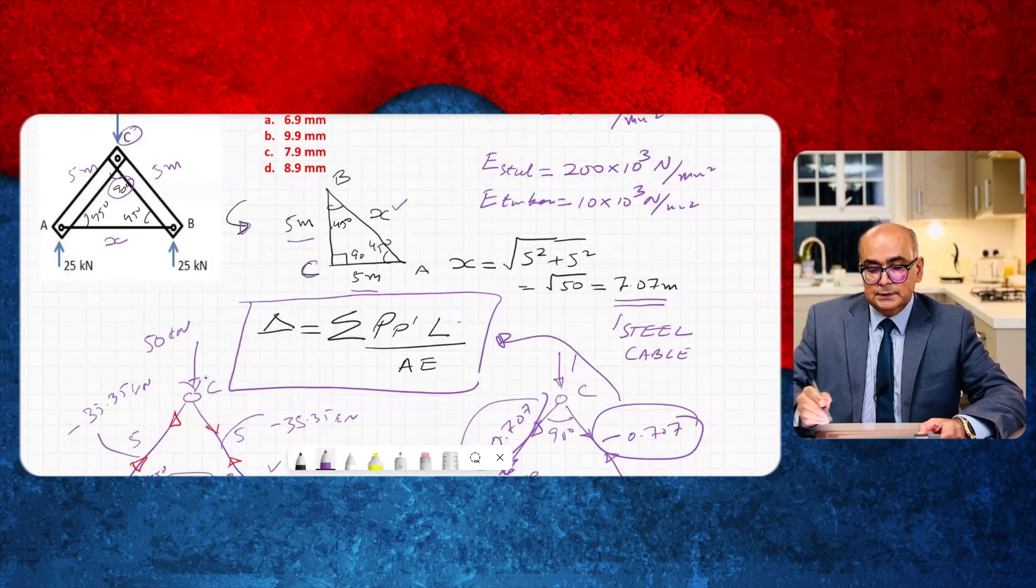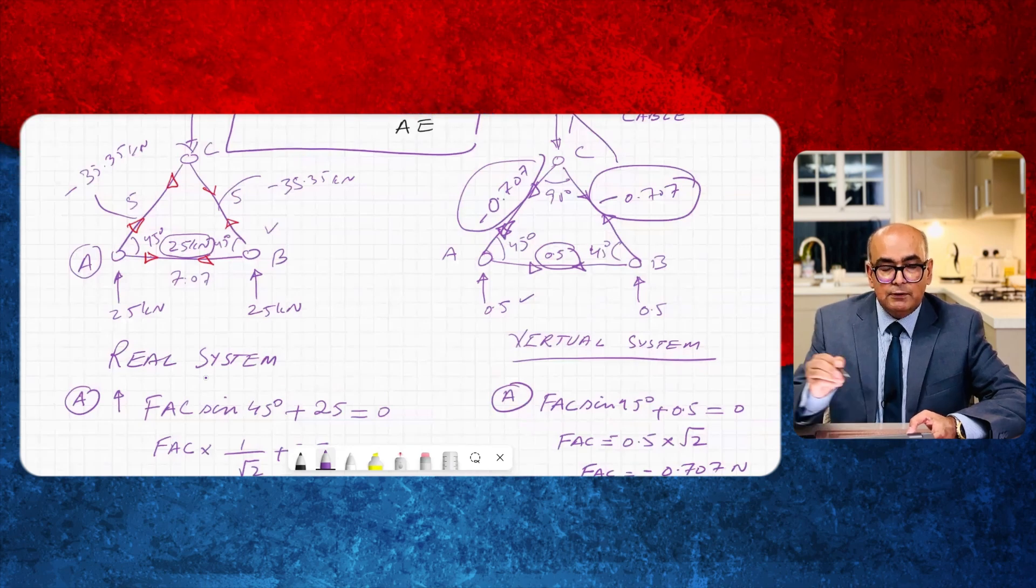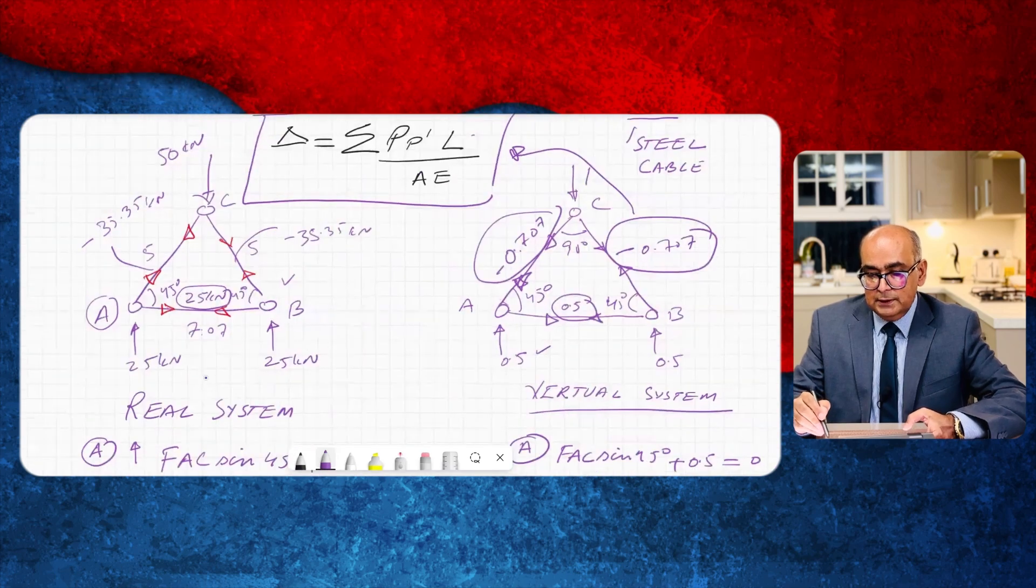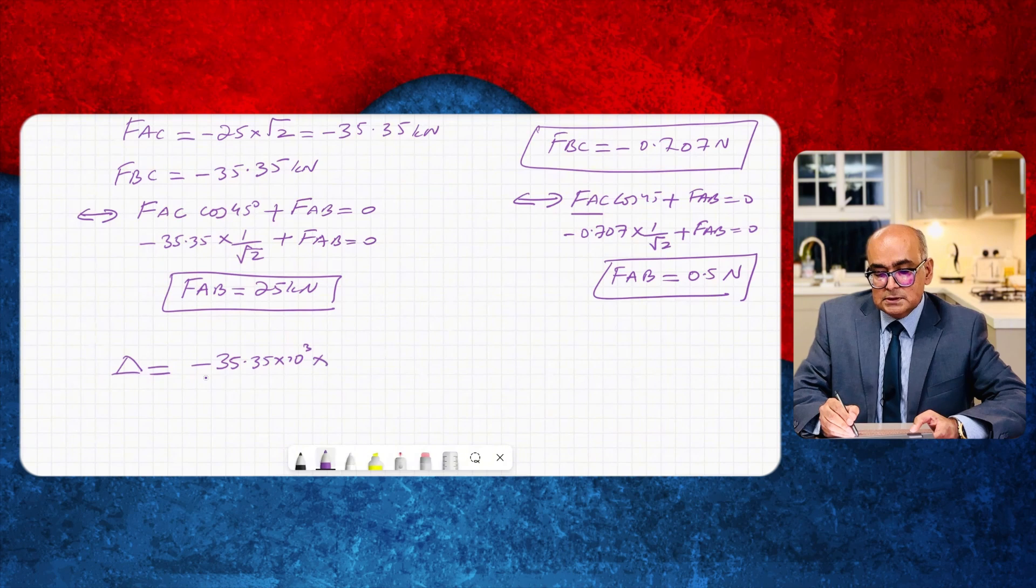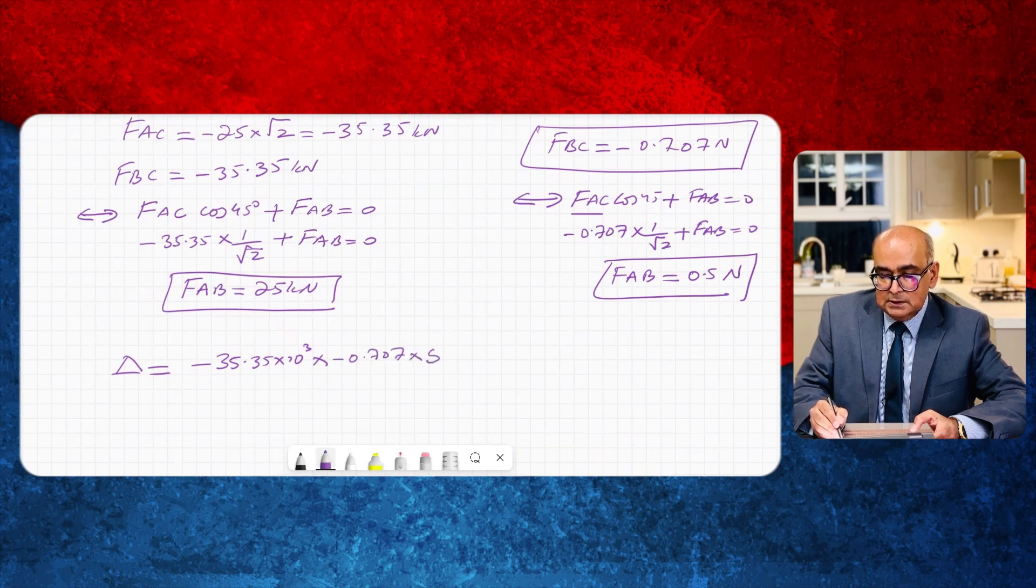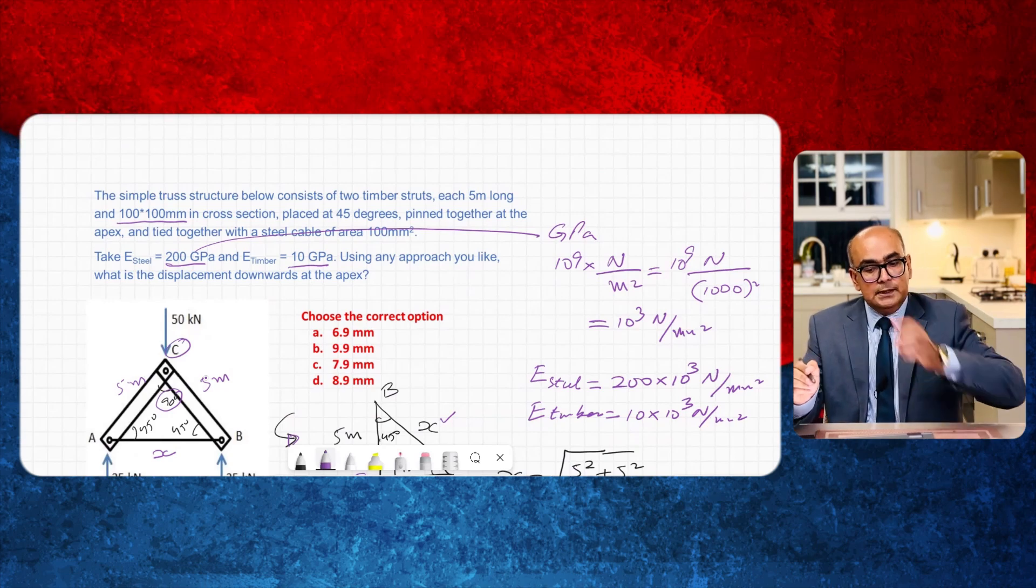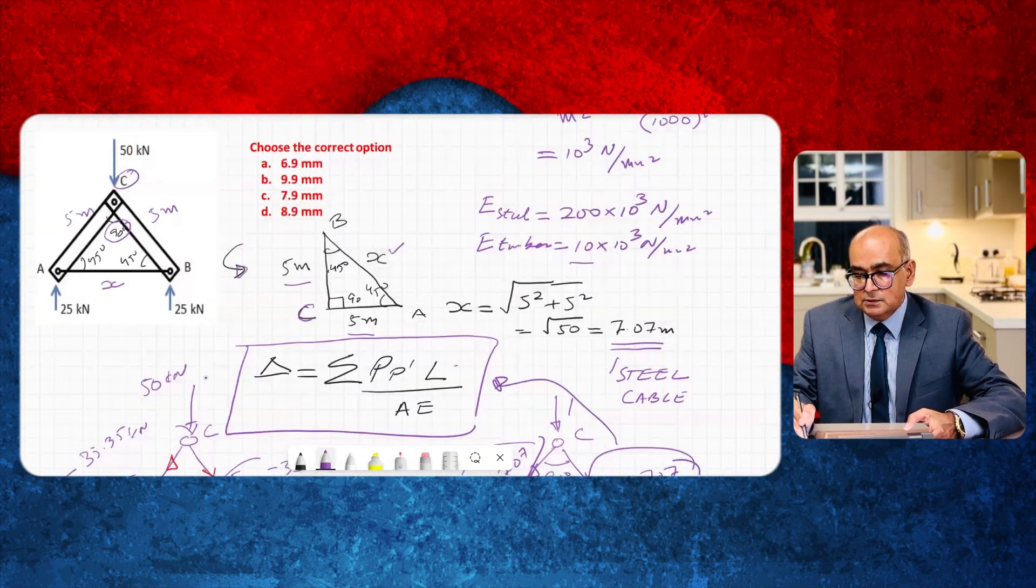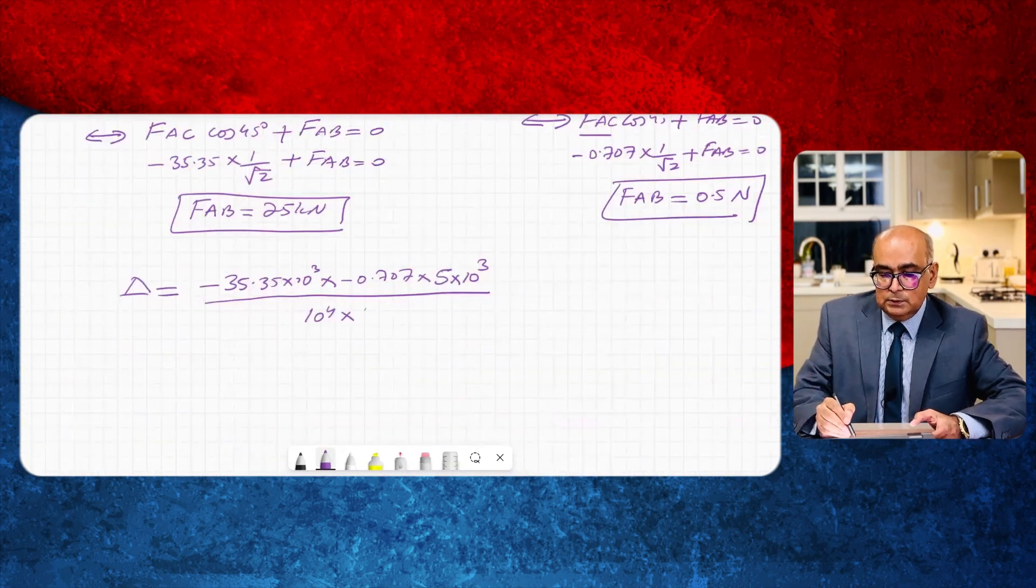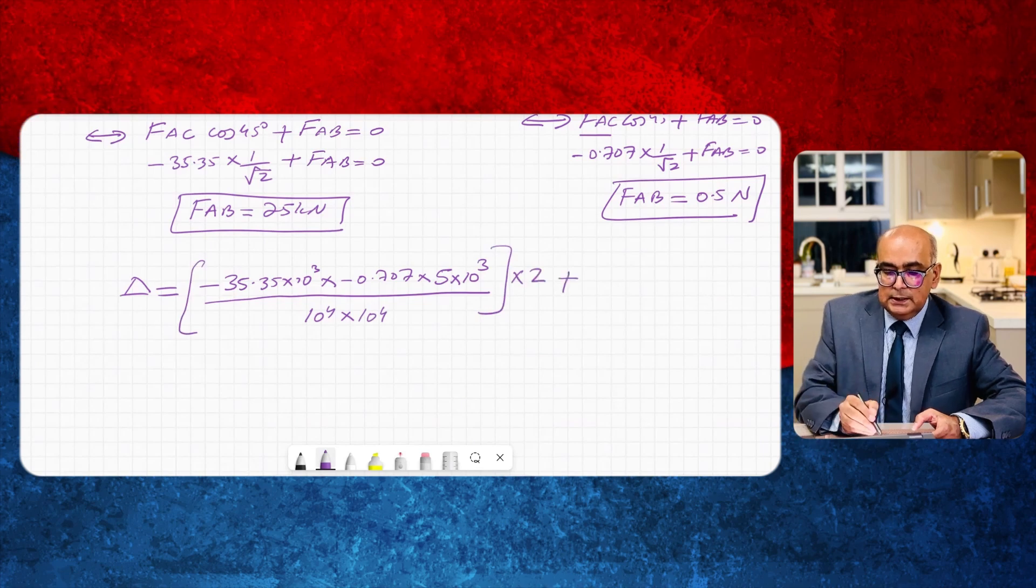Now once I've got all these values I will put them into this equation. Delta will be equal to P in the actual system. Let me start with struts. So minus 35.35 kilonewton and the load over here is minus 0.707. Minus 35.35 into 10 raised 3 that is P in real system and P in virtual system is minus 0.707 and then length of the system is 5 meters. I will convert it into millimeters. A is area of a strut. Area of strut is 100 by 100. So I will say 10 raised 4 divided by E for timber is 10 into 10 raise 3 newton per millimeter square. So I will say directly 10 raised 4. Now we have two of these members so that's why I will multiply it with two.